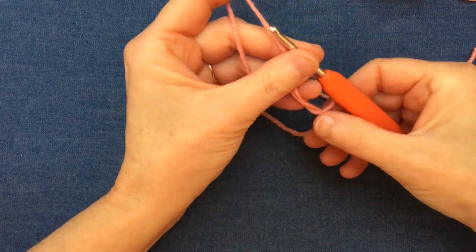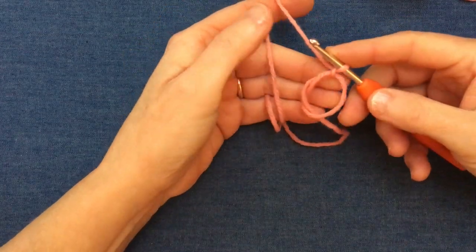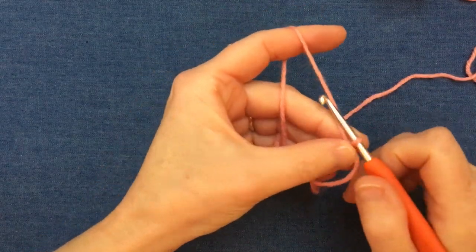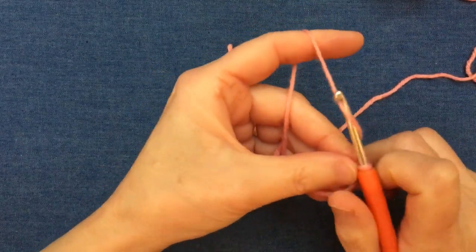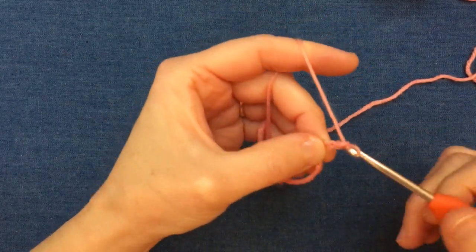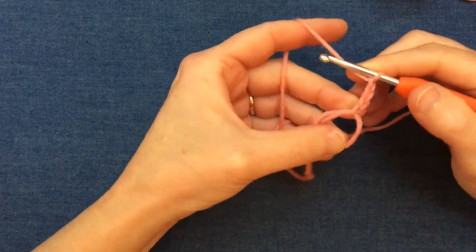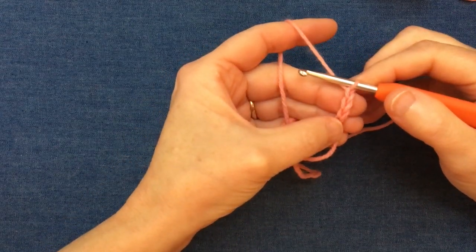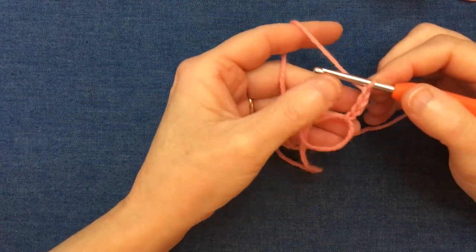I'm going to add 12 trebles into that ring. So we begin with our three chain just to get the height, and that's going to be counted as one treble stitch. And now I'm going to work a further 11 into this ring.